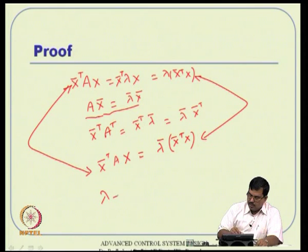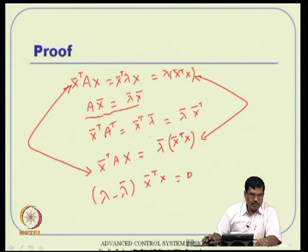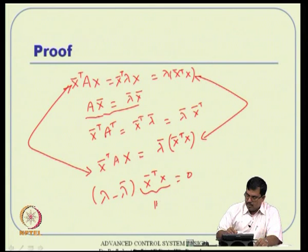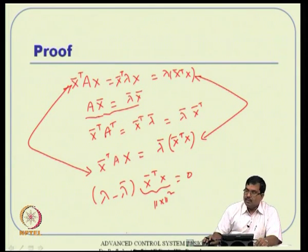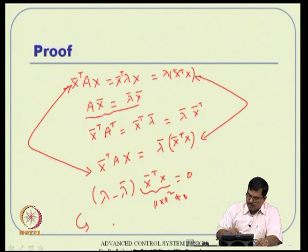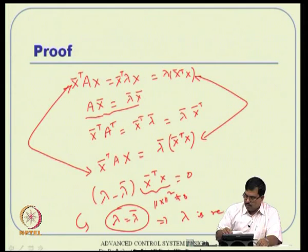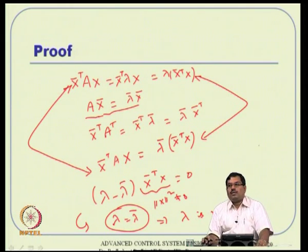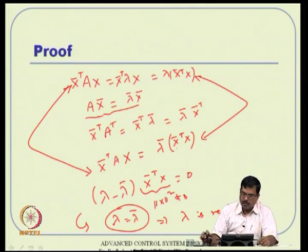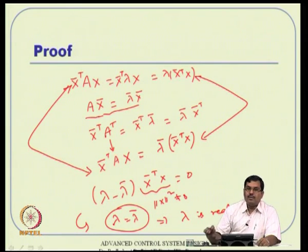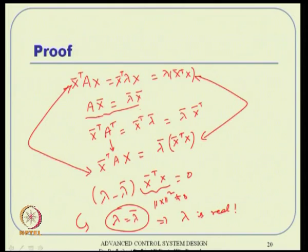Now X_bar^T * X is like ||X||^2, which cannot be zero for a non-trivial eigenvector. Therefore lambda - lambda_bar = 0, meaning lambda = lambda_bar, which means lambda is real. The critical step here is using A^T = A — without symmetry, this conclusion cannot be drawn.